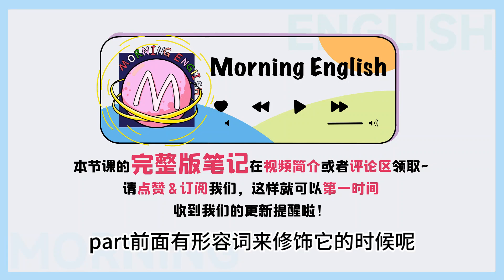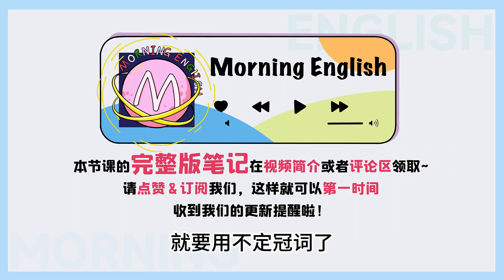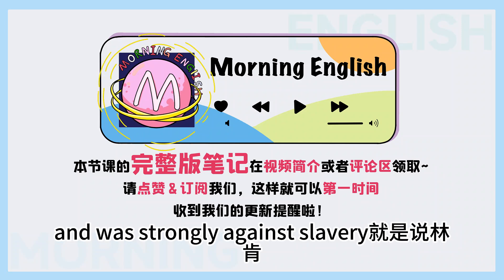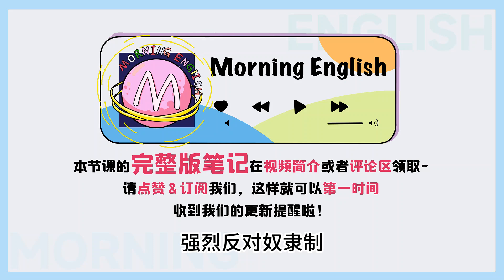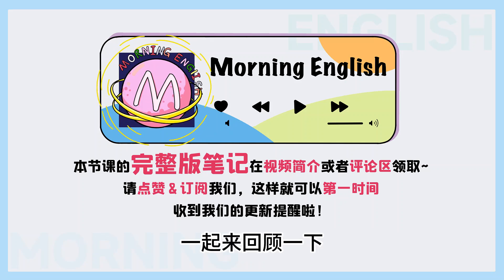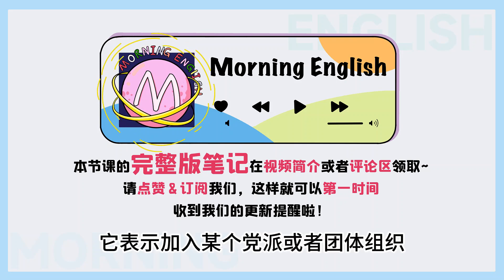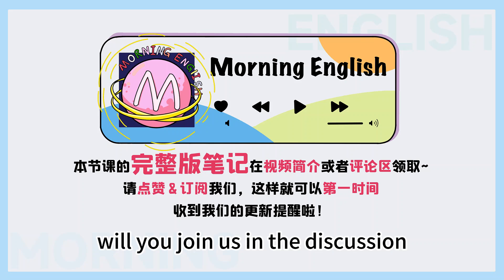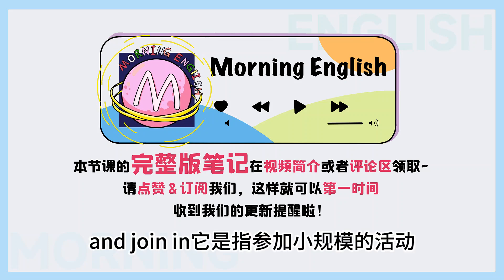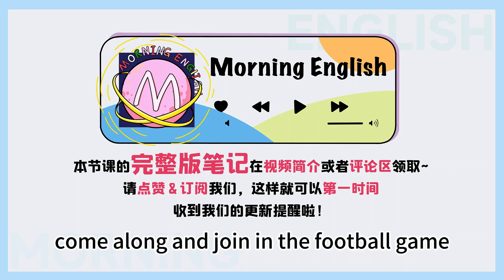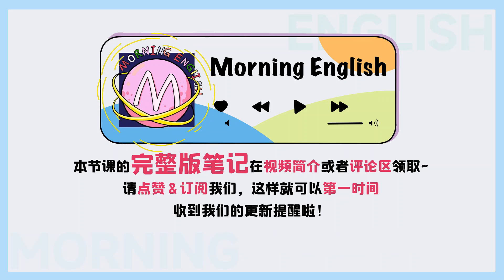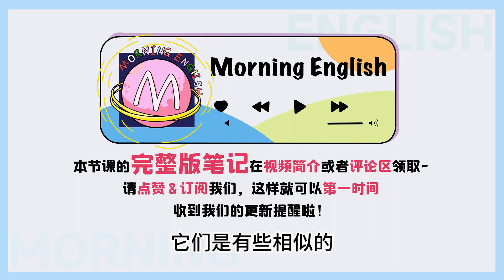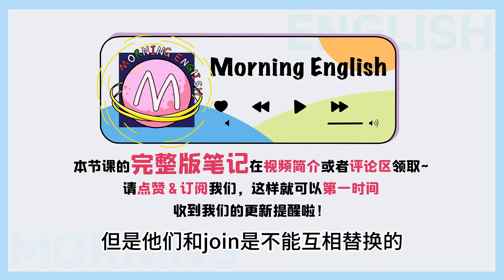所以 part 前面一般不用冠词，但是 part 前面有形容词来修饰它的时候，就要用不定冠词了。比方说：Lincoln took an active part in politics and was strongly against slavery，就是说，林肯他积极地参加政治活动，强烈反对奴隶制。好啦，那参加的这三种表达我们都讲完了，一起来回顾一下：Join 它表示加入某个党派或者团体组织，when did your brother join the army？它可以表达加入某人一起做某事，will you join us in the discussion？那 join in 它是指参加小规模的活动，come along and join in the football game。Take part in 它是指参加群众性的活动，we often take part in physical labor。那可以看得出来，take part in 和 join in 它们是有些相似的，一定程度上可以互换，但是它们和 join 是不能互相替换的。